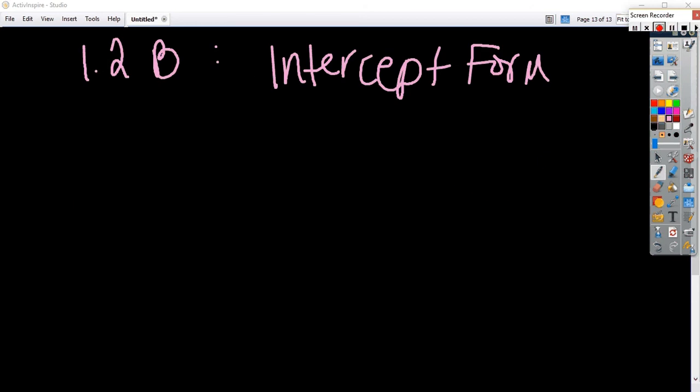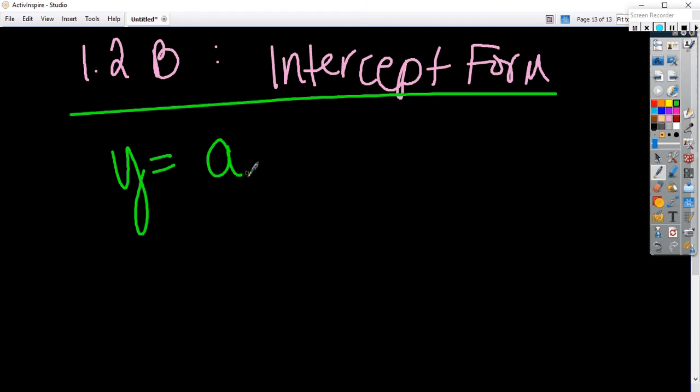You'll see some similarities with this form and the other two forms, but this is probably the most different of the three forms that we graphed. So this one, the a is coming back, but my variables are changing a little bit. Don't be scared.